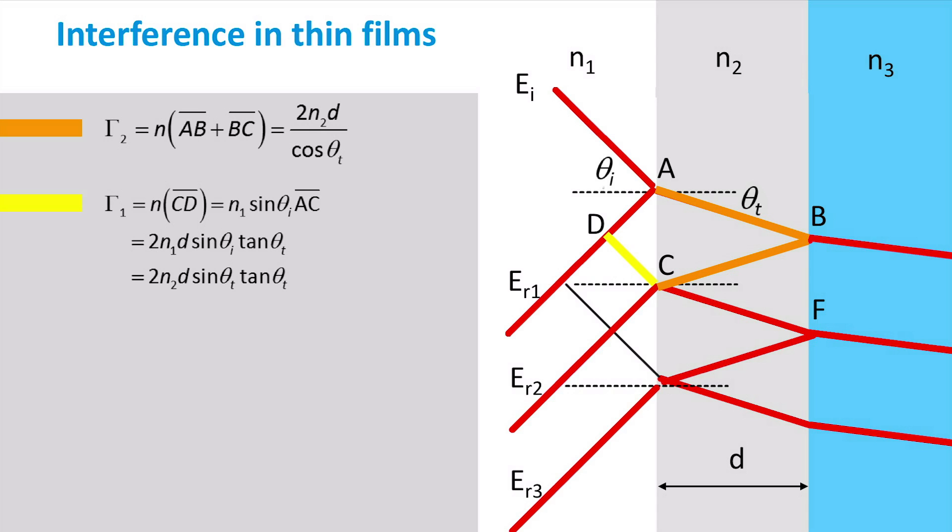According to Snell's law, we can replace N1 sinθi by N2 sinθt, so that the optical path length 1 and 2 are both expressed as a function of the same variables.